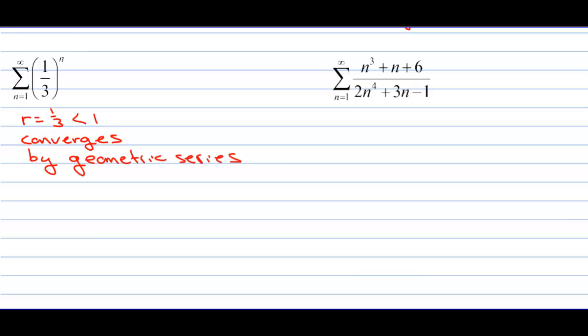The next one is, I can't use direct comparison test because it's just a little bit too complicated. So we're going to have to use limit comparison test. We will compare this to either 1 over 2n, or you can probably even get away with just making it 1 over n. But either way, what we compare it to diverges by harmonic series.